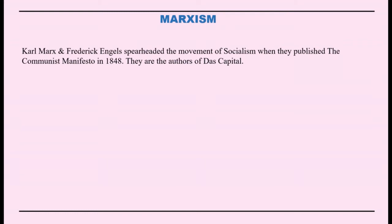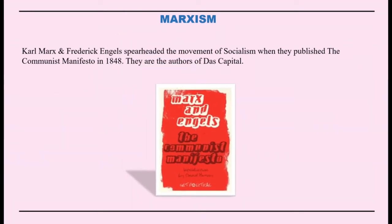Karl Marx and his friend Friedrich Engels spearheaded the movement of socialism when they published the Communist Manifesto in 1848. The Communist Manifesto interprets the role of the working class in the past and the future and gives a clear call to workers to unite for securing their emancipation. Besides the Communist Manifesto, Marx and Engels are the authors of Das Kapital, which explains the basic features of Marxism. Marx was an atheist, but exploited workers revered him as God and a holy savior, while the remaining people hated him, and to the capitalist he was Saturn.